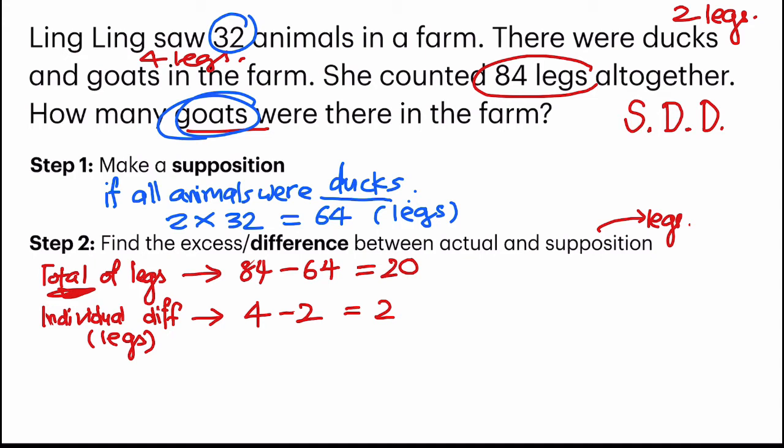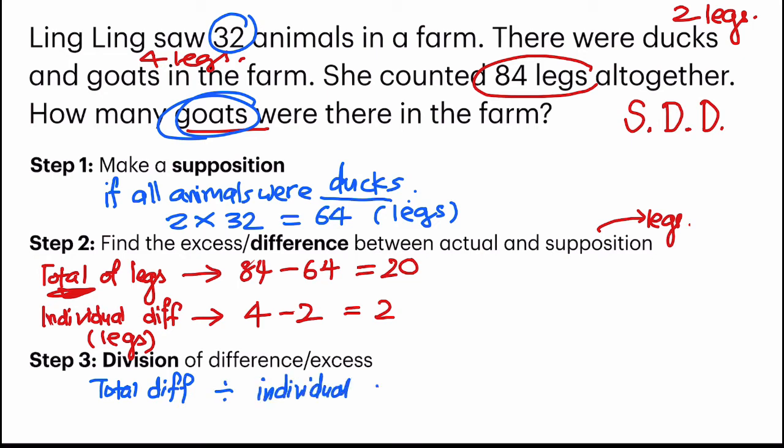The last step, which is D, is division. We are going to divide the difference and we will get our answer straight away. We are going to take total difference divided by individual difference. Which means in this case, it's 20 divided by 2. And we will get the answer of 10. And 10 is the number of goats. That's our answer.